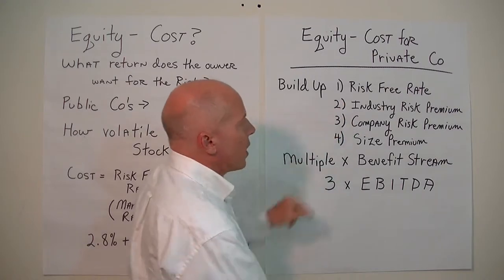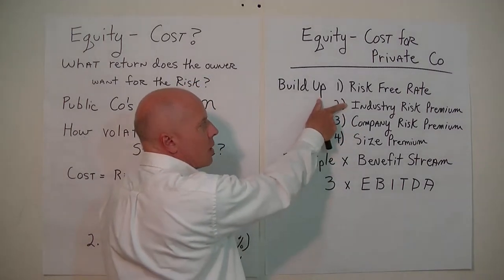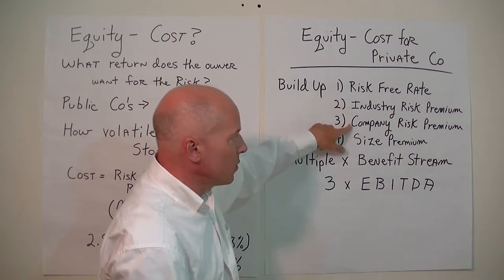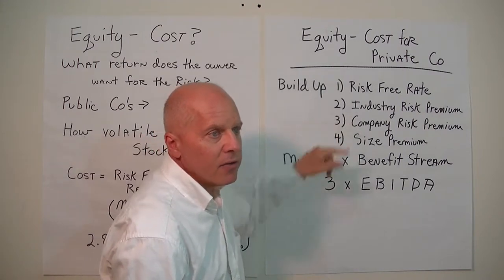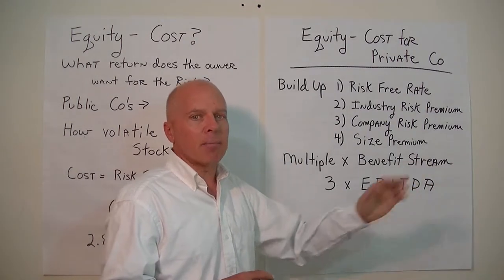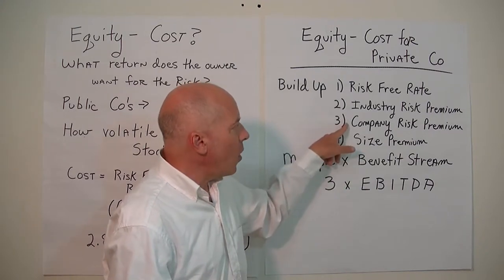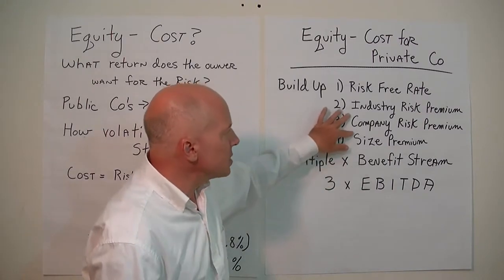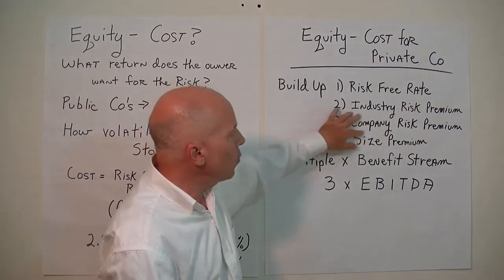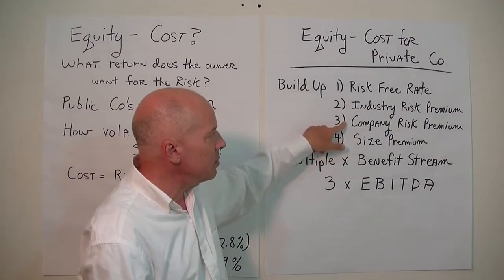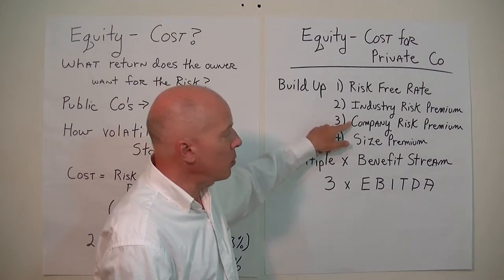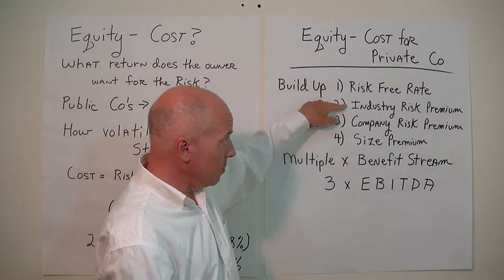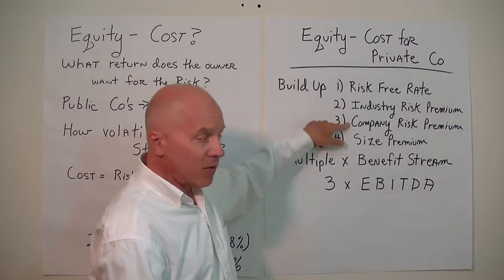You have to understand your industry very well to figure out the risk premium, which varies between industries. Then there are company-specific risks — for example, key personnel who if they leave could cost the company a lot of business, or a situation where half the business resides with one customer. If that customer goes away, half the business disappears, which is extremely high risk. We need to measure how risky the company itself is: does it have a good management team, a good strategy, and a diversified customer base?